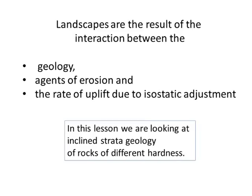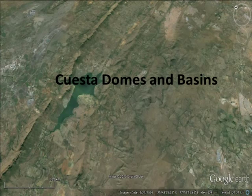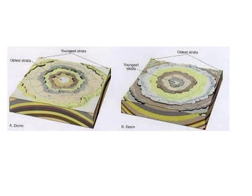Inclined strata all start off as horizontal strata, so we need to look at how the process of tilting the strata takes place. There are two basic processes. The one is called doming, when something pushes up underneath the horizontal strata from below. The other is called basining, when the horizontal strata sink into a basin shape, as shown in this diagram here. On the left we have doming, and in this case you'll find that the older strata are exposed in the middle, and the cuestas that result appear facing inwards around the edge of the dome. Whereas in the case of the basin, the cuestas face outwards.